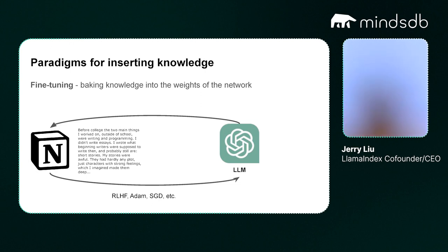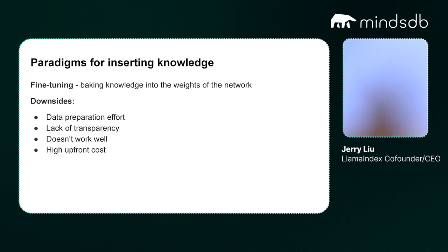If you use ChatGPT and ask it about anything on Wikipedia, it's going to know about it because it's trained on that data. There are downsides right now. There are new advancements like LoRA on top of open-source models that show some promise for fine-tuning, but in general it's pretty expensive and requires a decent amount of compute and also upfront effort to actually get working.